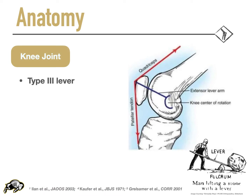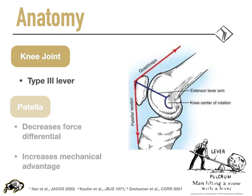Taking a deeper look at anatomy, the knee joint itself is a type III lever, in which the effort is applied between the load — which is the foot — and the fulcrum, which is the knee. The patella is a significant component of the extensor mechanism because it acts as a fulcrum and increases the distance between the center of rotation of the knee and the quadriceps, effectively increasing the lever arm of the quadriceps and giving it a mechanical advantage.